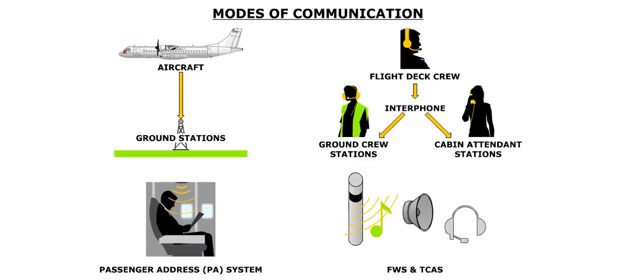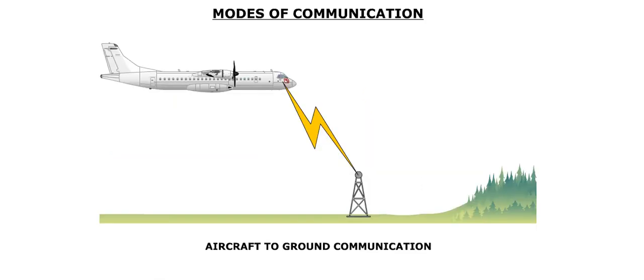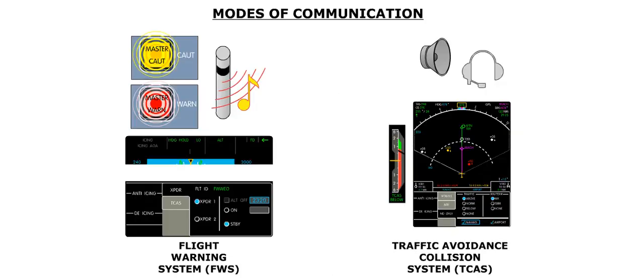The communications system provides for several modes of communication, including aircraft-to-ground communication, interphone communication between the flight crew, cabin crew, and ground crew, a passenger address or PA system, and automatic warning systems that alert the flight crew.